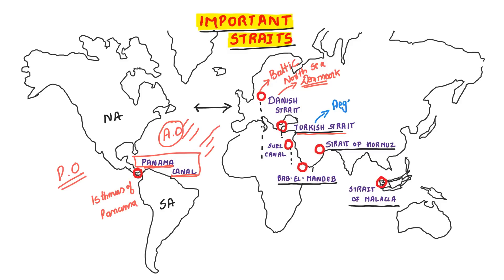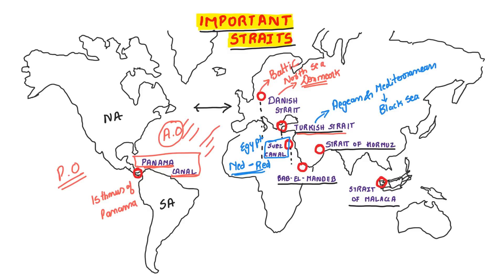Next is the Turkish Strait. It connects the Aegean Sea and the Mediterranean Sea to the Black Sea. This is the most important question.